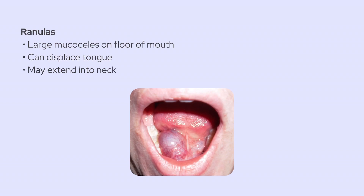One last clinical pearl: sometimes mucoceles in the floor of the mouth can get pretty big, and when that happens, they're called ranulas. Ranulas can displace the tongue or even extend down into the neck in rare cases. So always be on the lookout for that, especially when you see a fluctuant swelling in the floor of the mouth.